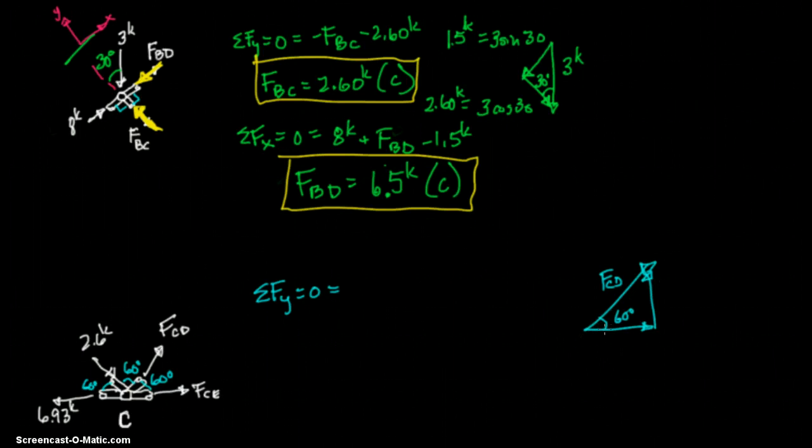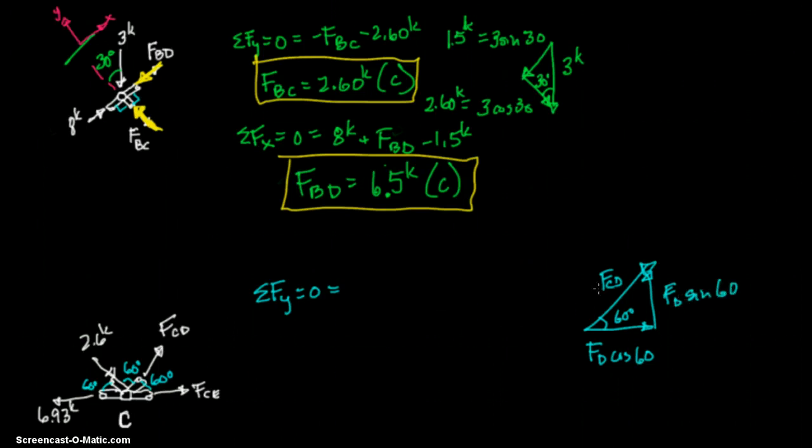FCE. And we know that this is 60 degrees. This is FCD. And it's going to go right there and up. The components. And we know 60 degrees. So we know once again, we know the hypotenuse. So let's go ahead. This is going to be your cosine, since it is adjacent. And this will be your sine, since it is opposite.